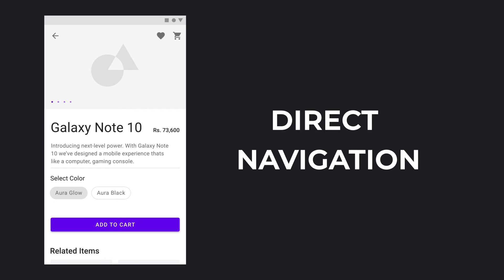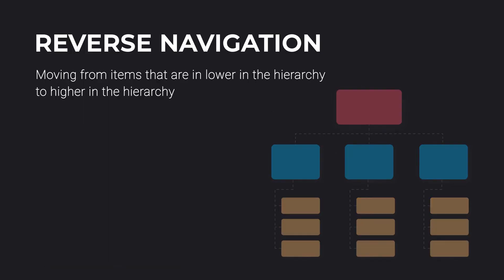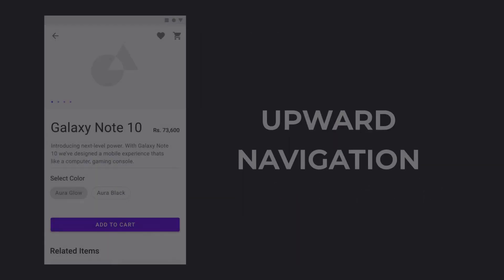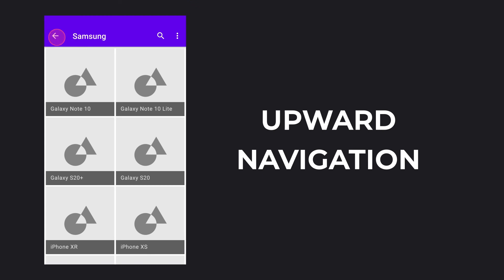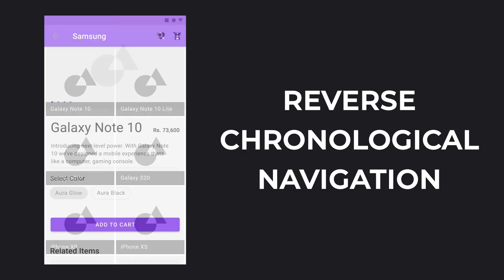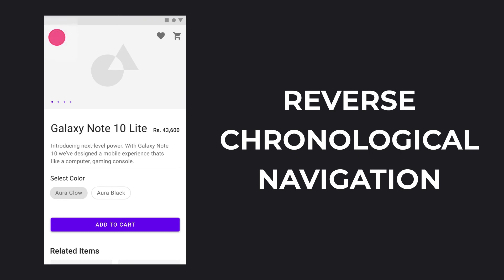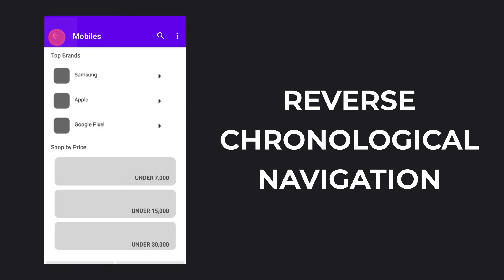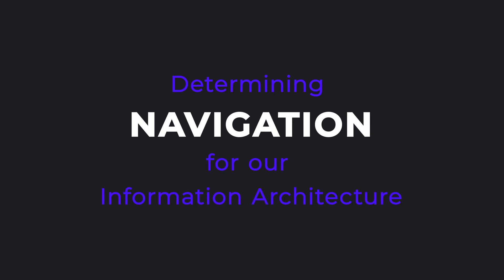Of the three major navigation types, the final one is reverse navigation. As the name suggests, it is when a user moves in the reverse direction from a page lower in the hierarchy to a page that is higher. There are two types: upward navigation, when you travel from a child node to the parent, and reverse chronological navigation, when you travel back to pages in the same but reverse order in which you visited each of them. So we are going to use these navigation types to determine which navigation is suitable for each section in our IA.